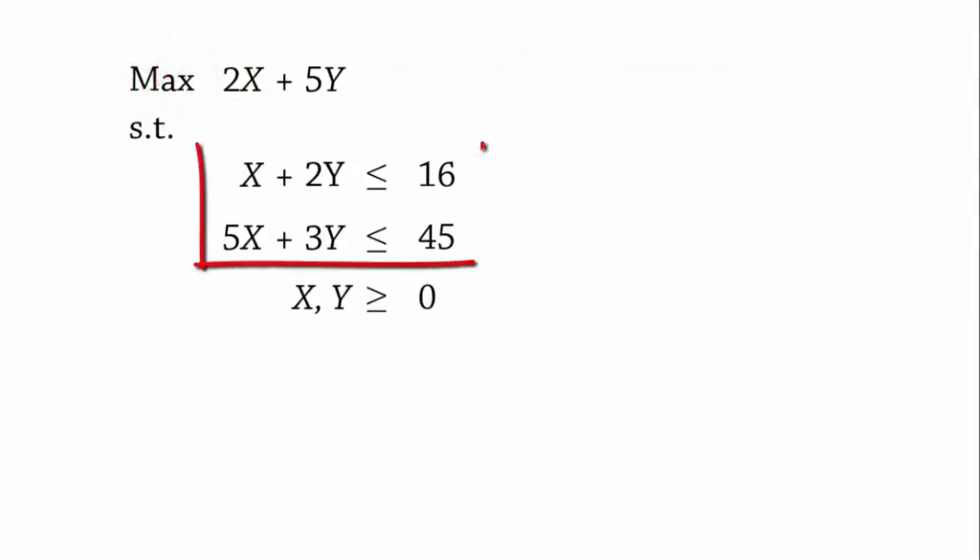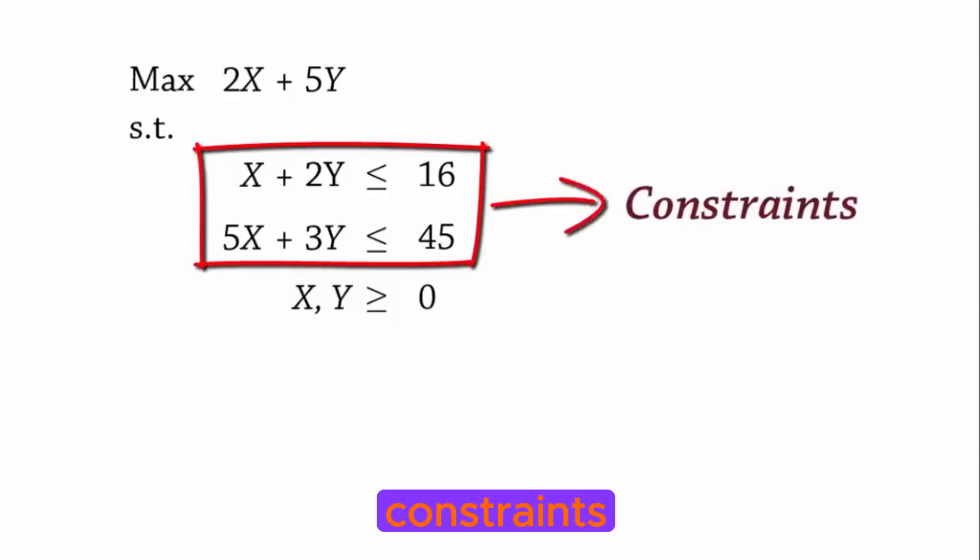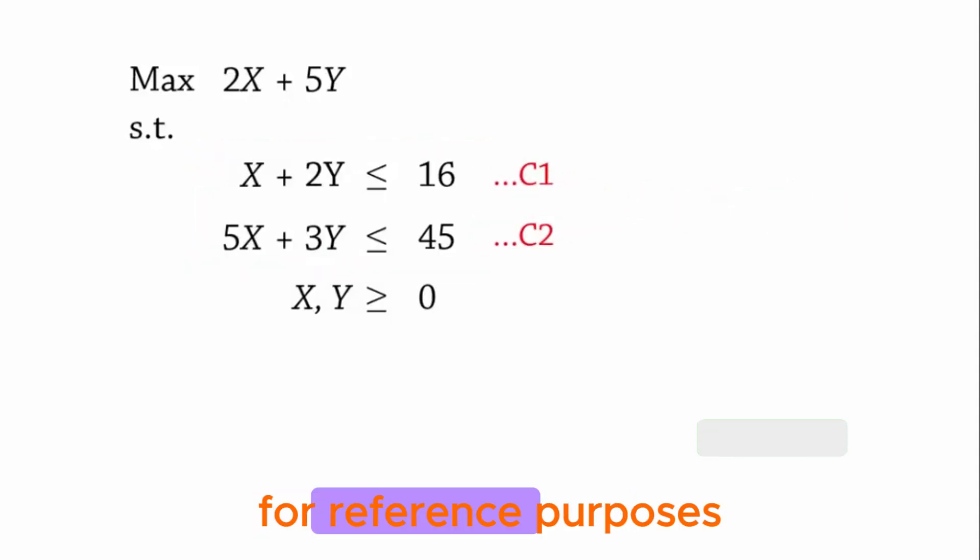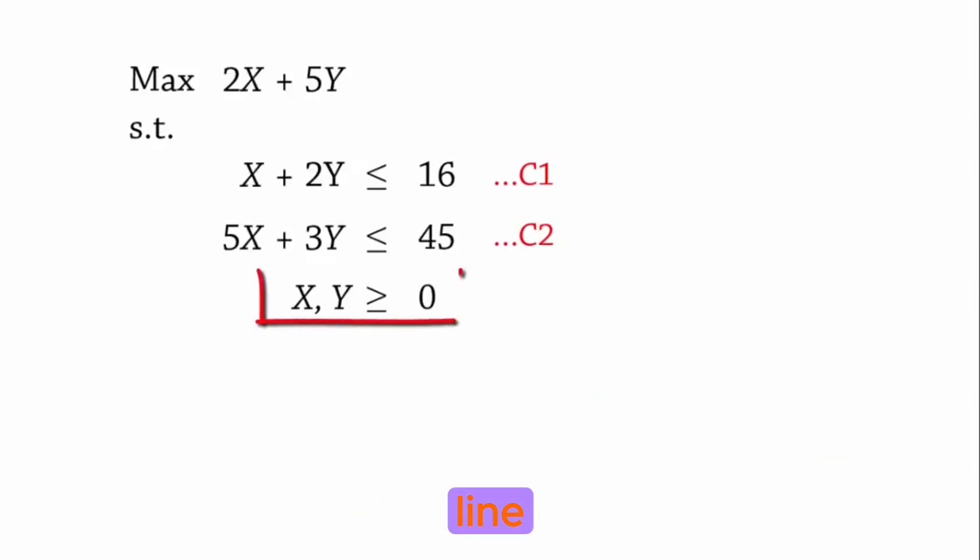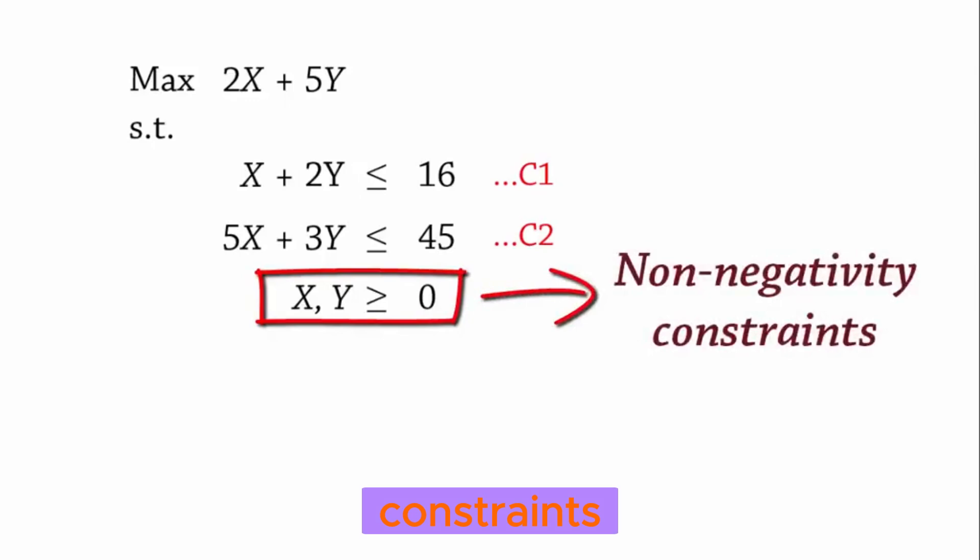The next two lines are called constraints. They are restrictions that shape how you attain the objective. Let's call them C1 and C2 for reference purposes. Since we're dealing with real life objects, we do not expect them to have negative values. So the last line here tells us that both X and Y have to be greater or equal to 0. We call them the non-negativity constraints.